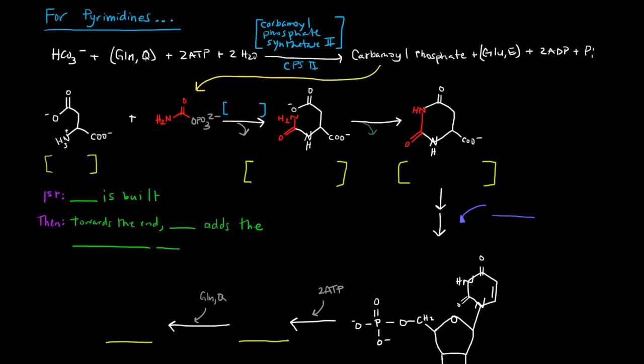Once we have this carbamoyl phosphate, what we're going to do is we're going to take it and add it to this molecule here. What is this molecule? This is an amino acid that you should recognize. This is aspartate, specifically L-aspartate. L-aspartate is going to join carbamoyl phosphate and produce this molecule here. And this molecule is called N-carbamoyl L-aspartate. This phosphate hops off, and this carbamoyl portion gets attached to the L-aspartate here.